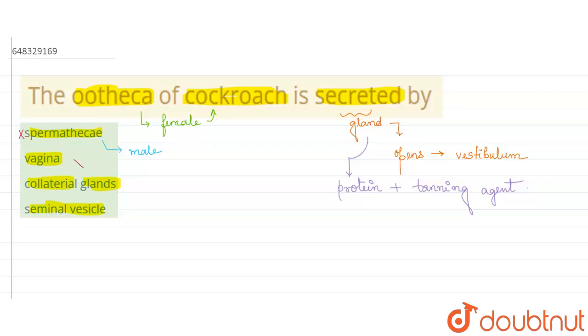Next, vagina is the genital part - this is the opening of the reproductive system in the female, so this is also wrong. And seminal vesicle, if we see, again this is found in the male, so this is again wrong.